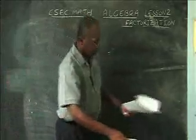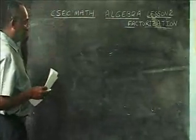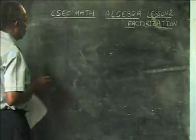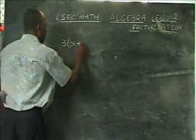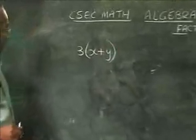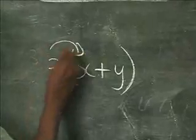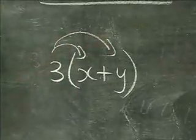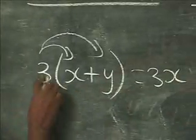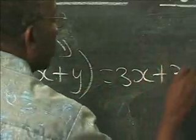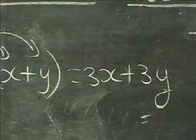Factorization means we are trying to come up with factors. Let's go back to something you know. Suppose we have 3(x + y) and you're told to simplify it — you multiply the 3 by each term in the bracket. Three by x gives 3x, and three by y gives 3y. So you remove the bracket and that's what you get.